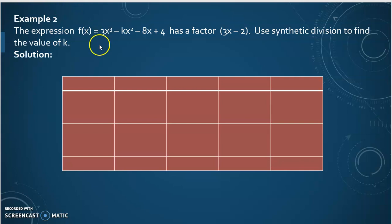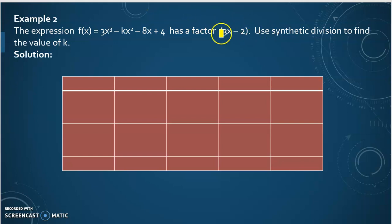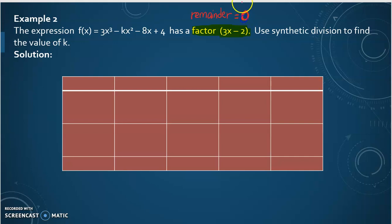Now we look at example 2. The expression f(x) is equal to 3x³ minus kx² minus x plus 4 has a factor 3x minus 2. From here, we know that 3x minus 2 is a factor, which means that the remainder is equal to 0. The question is: use synthetic division to find the value of k.